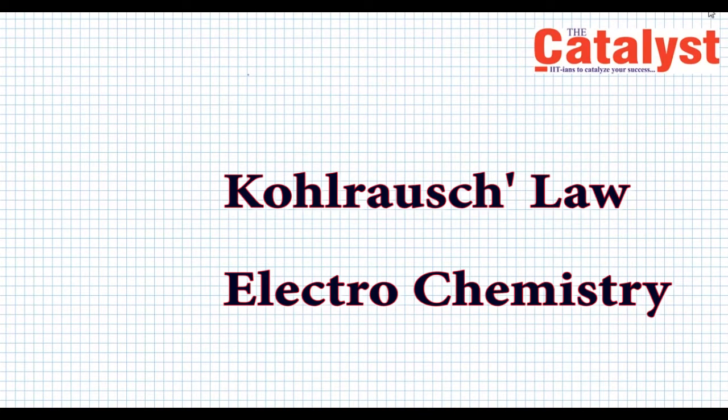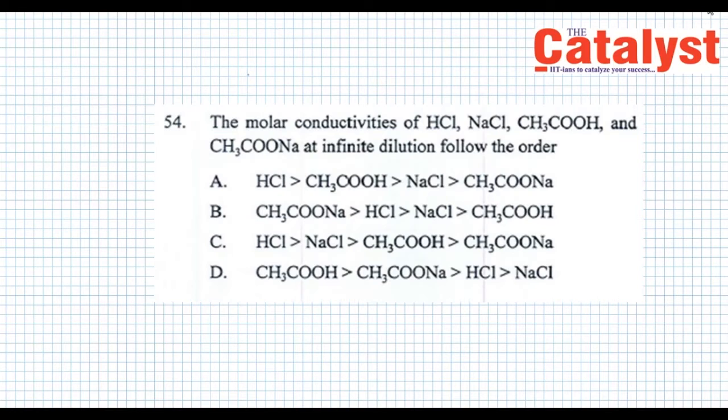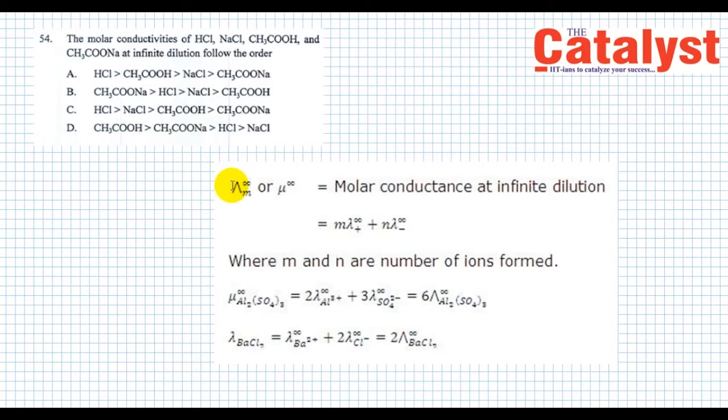In our next question, we shall discuss Kohlrausch's law from the electrochemistry chapter of class 12th. Question number 54 is: the molar conductivities of HCl, NaCl, acetic acid, and sodium acetate at infinite dilution shall follow the order. The molar conductance at infinite dilution shall be given by the following equation, where m and n are the number of ions formed, and λ⁺∞ and λ⁻∞ are the molar conductivity at infinite dilution for cation and anion respectively.